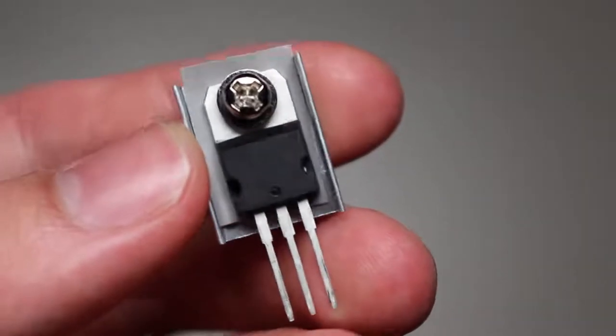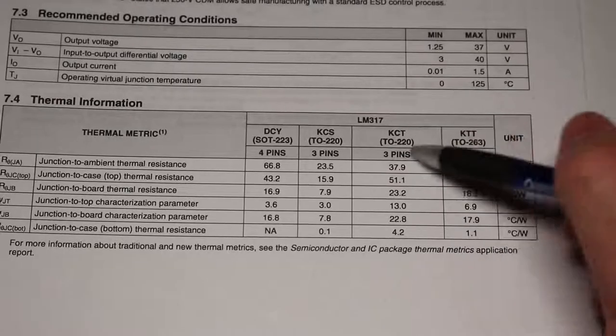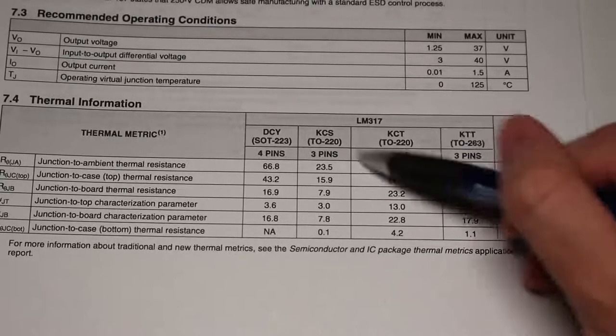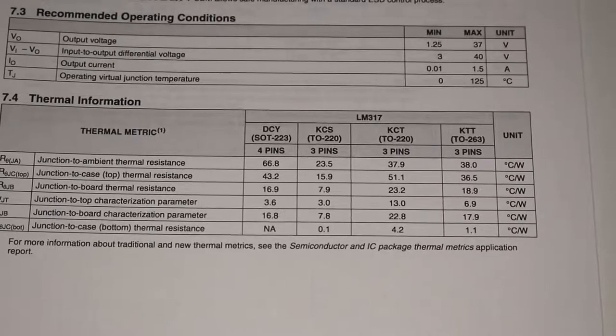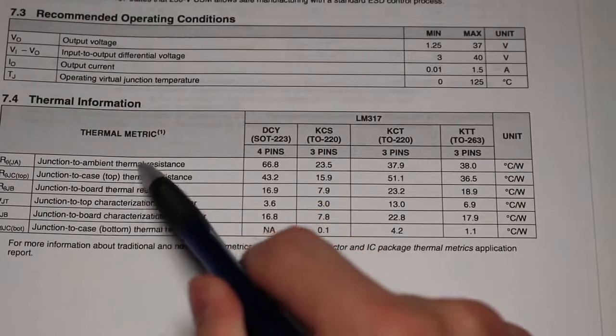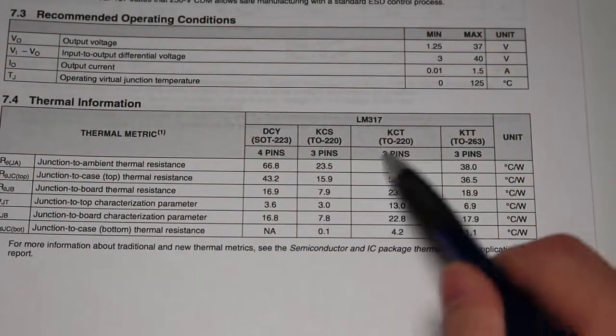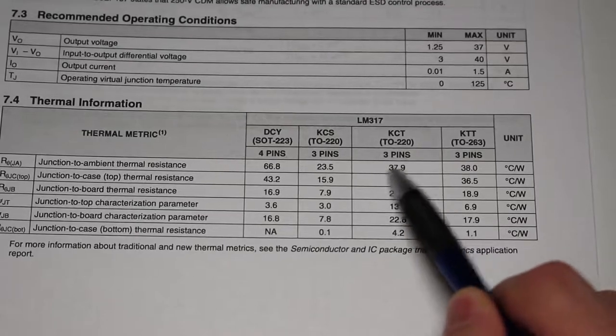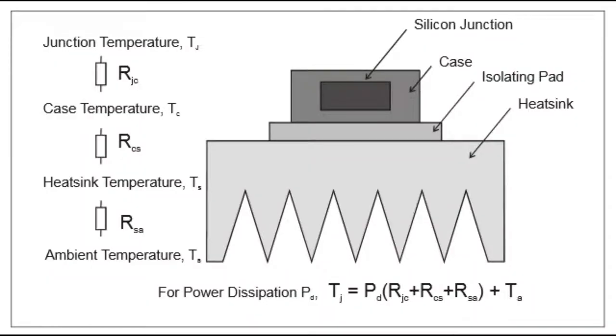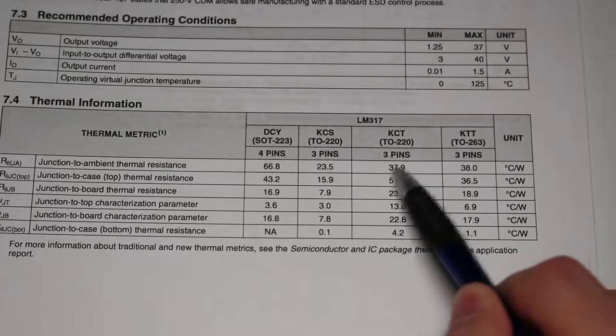The LM317 I'm using is a TO220 package. However, we can see the other packages around the table. The important metric that we are looking for is the junction to ambient thermal resistance. This basically is the resistance from the inside of the IC to the exposed area in the air. The LM317 has a 37.9 degrees Celsius per watt thermal resistance.